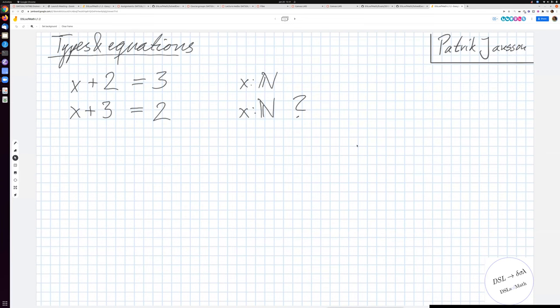So I'm showing here two equations. The first is x plus 2 equals 3, with the side comment saying that x has type natural number. Then we can solve this equation saying, if we let x equal 1, that is a solution to this problem.